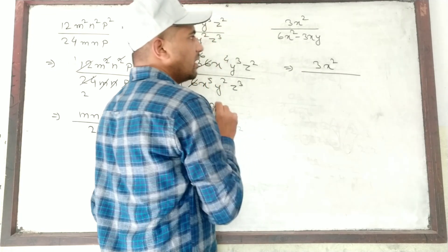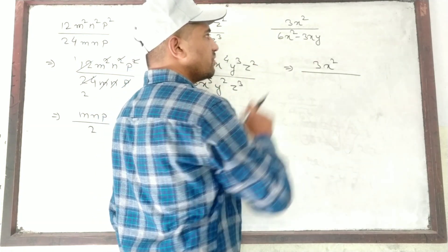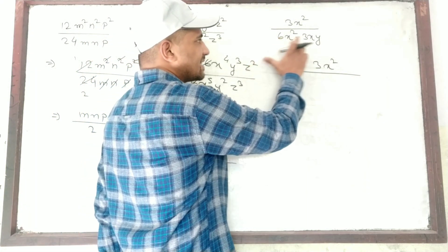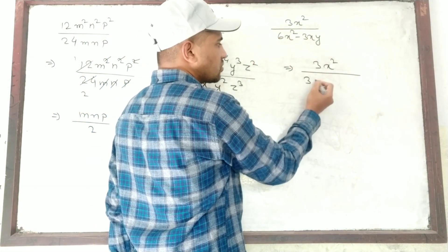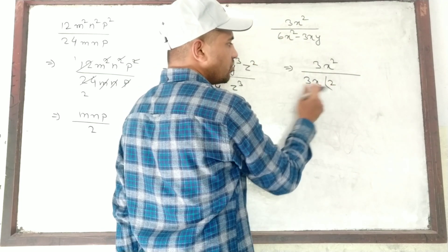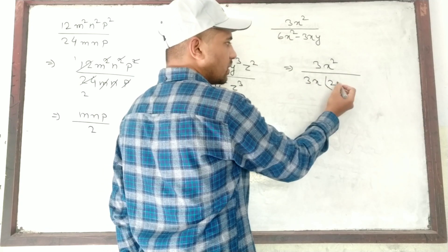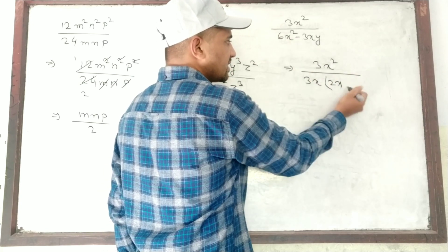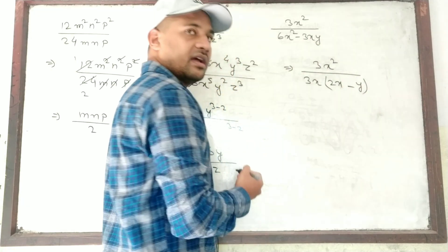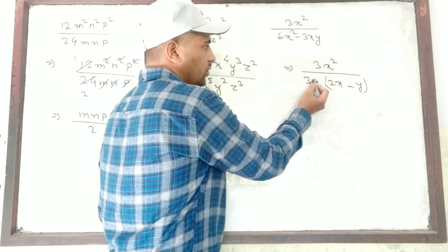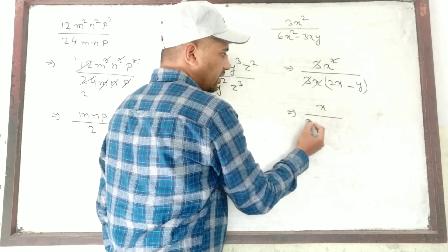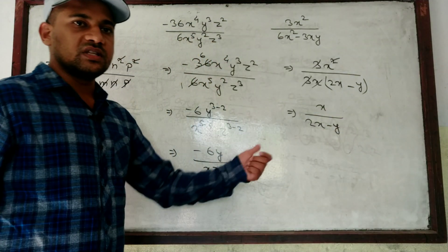Look at the next question. Here in the numerator there are two terms with 3X², so first we have to take a common factor before we can reduce. Common of 6 and 3 is 3. Common of X² and X is X. So 3X is common. What remains: 3 into 2 gives 6, and X square with X common gives X. Remaining in the second term is Y. After canceling 3 and 3, X and X, we get the answer: X divided by (2X minus Y).